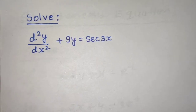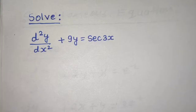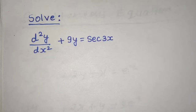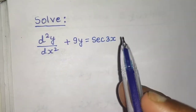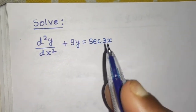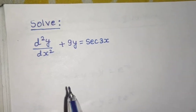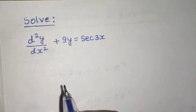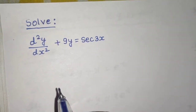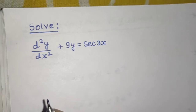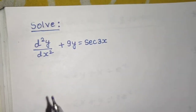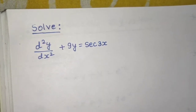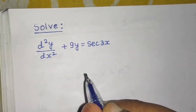One more question from linear differential equations with constant coefficients. We need to solve d²y/dx² + 9y = sec(3x). The RHS has sec(3x). Till now we know the rule for e^(ax)·cos(ax), e^(ax)·v(x), x^n, and so on, but not a rule for something like sec(3x). So let's see a general rule for finding the particular integral.